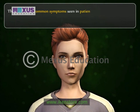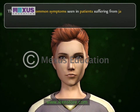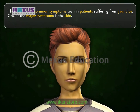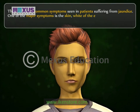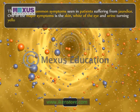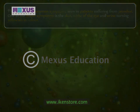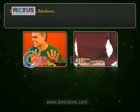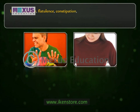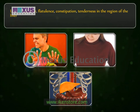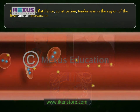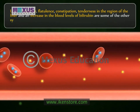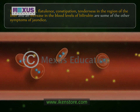There are some common symptoms seen in patients suffering from jaundice. One of the major symptoms is the skin, white of the eye, and urine turning yellowish in color. Lack of appetite, flatulence, constipation, tenderness in the region of the liver, and an increase in the blood levels of bilirubin are some of the other symptoms of jaundice.